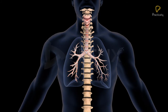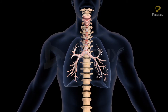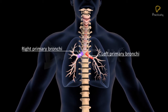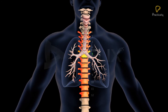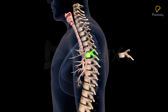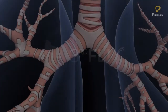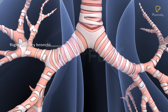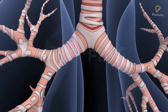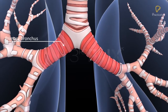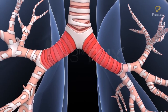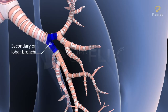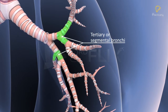Bronchi and bronchioles: In the mid-thoracic cavity, the trachea divides into the right and left primary bronchi at the level of the 5th thoracic vertebra, that is the 12th vertebra of the vertebral column. The right primary bronchus is wider, shorter, and more vertical than the left primary bronchus. Each primary bronchus enters the lung of its side at the hilum and divides into secondary or lobar bronchi, which further divide into tertiary or segmental bronchi.